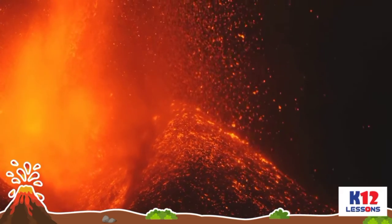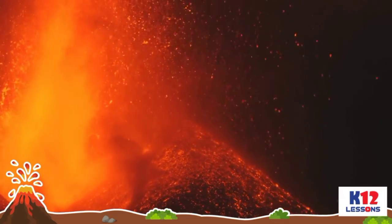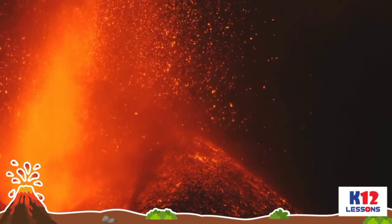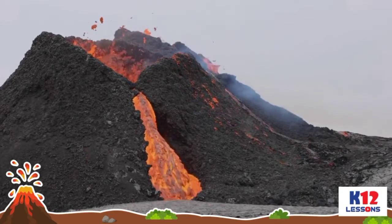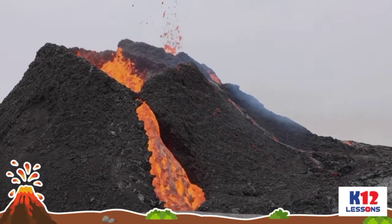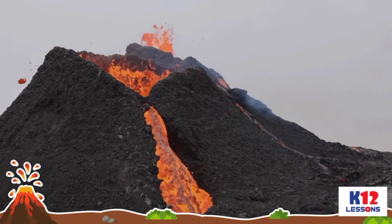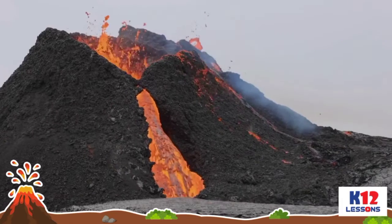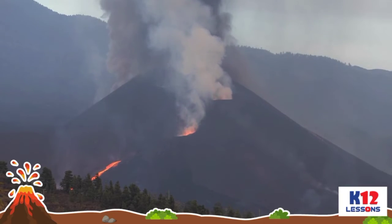In some cases, new magma gets injected into an already filled magma chamber, causing pressure to build up and contribute to eruption. During the eruption, magma shoots up out of the volcano and flows down the side of the mountain as hot flowing lava. Magma that reaches the surface becomes lava. The volcano also releases ashes and gases.